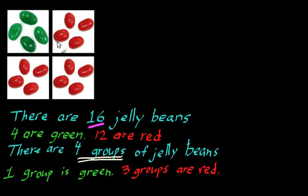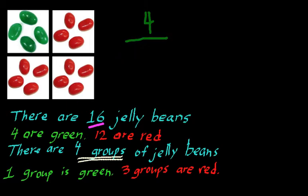Of these 16 jelly beans, 4 are green and 12 are red. So what fraction of jelly beans is green? Well, since we know that four of the jelly beans are green and 12 are red, there are 12 red jelly beans and four green ones, so there are 16 total jelly beans. That means 4 out of 16 jelly beans are green.